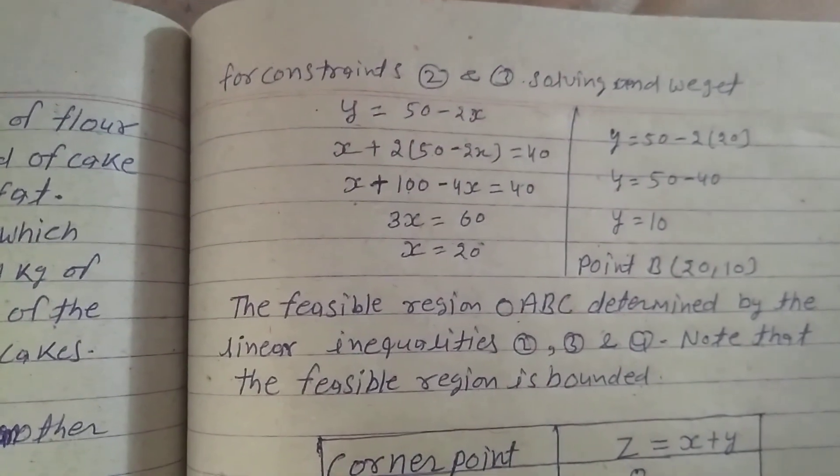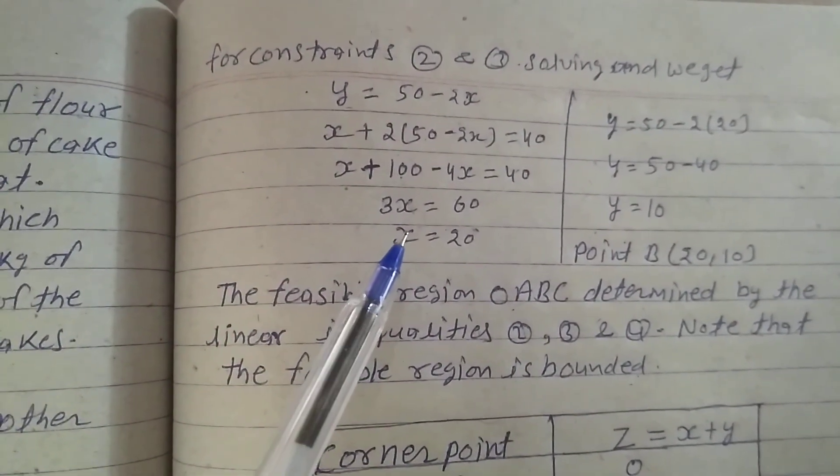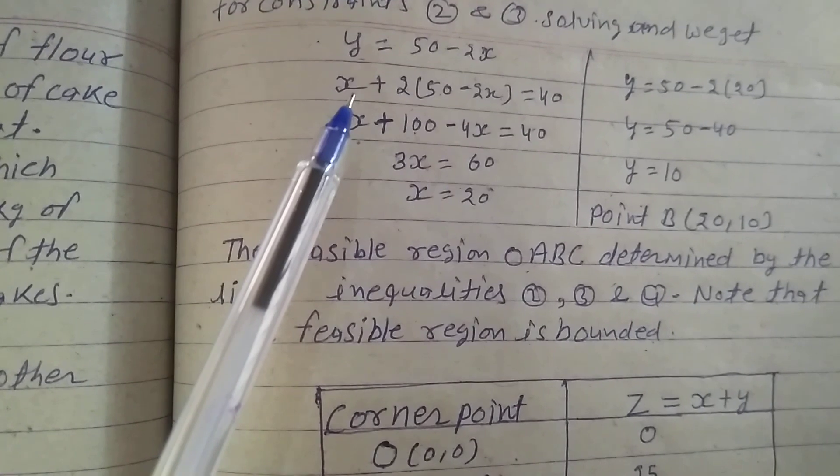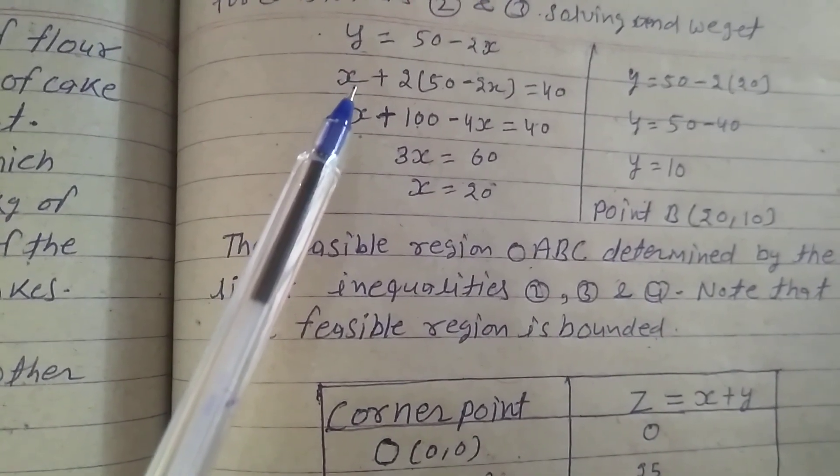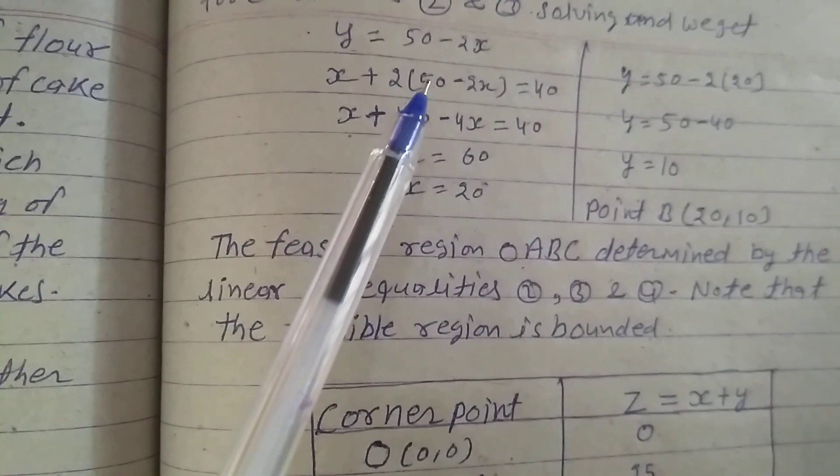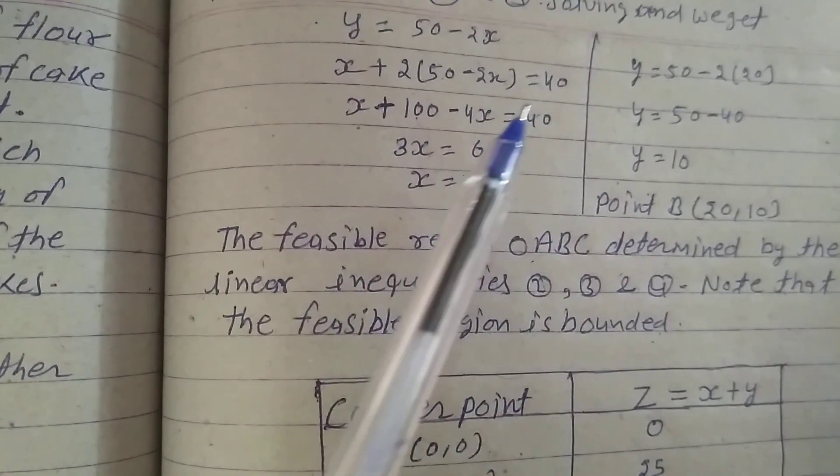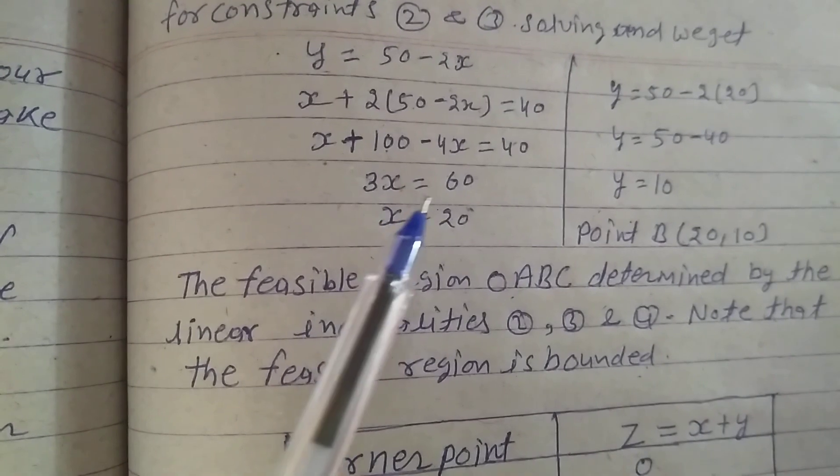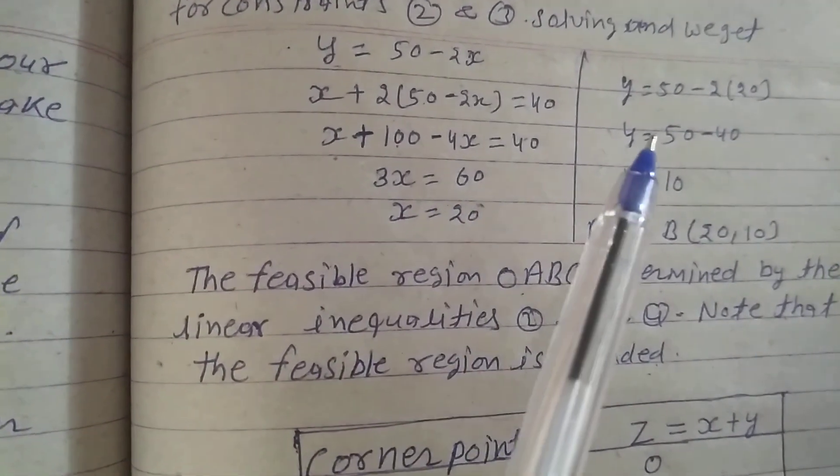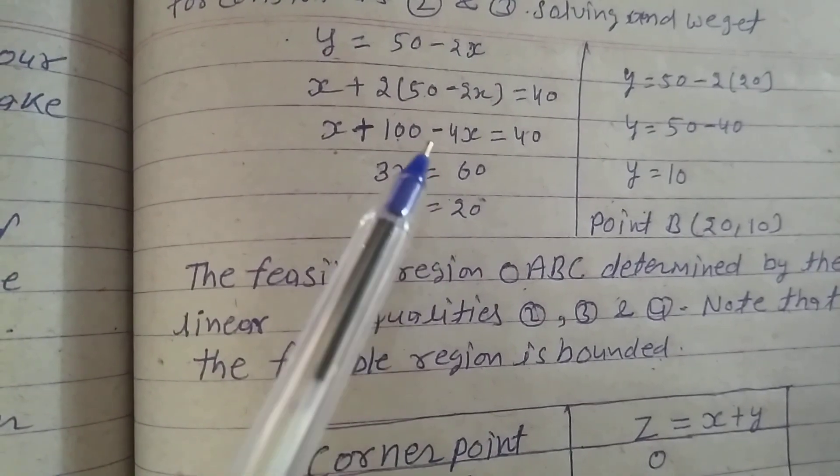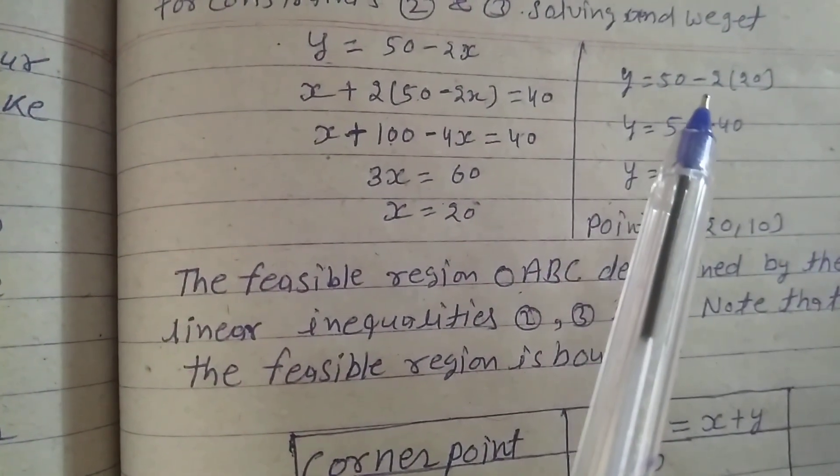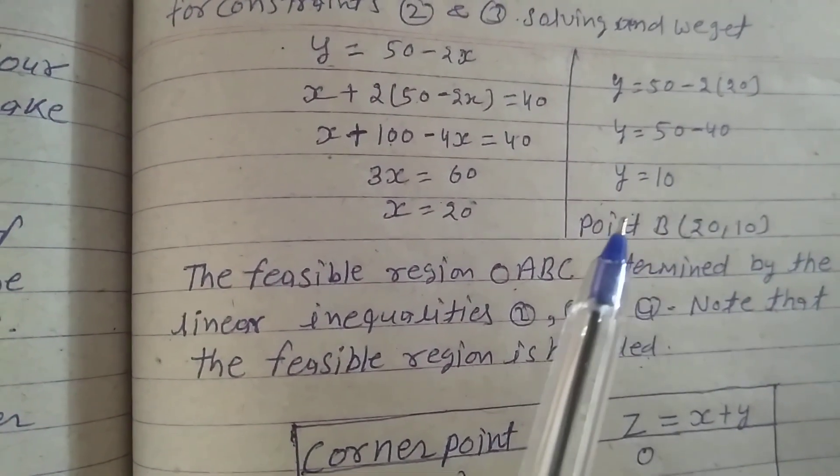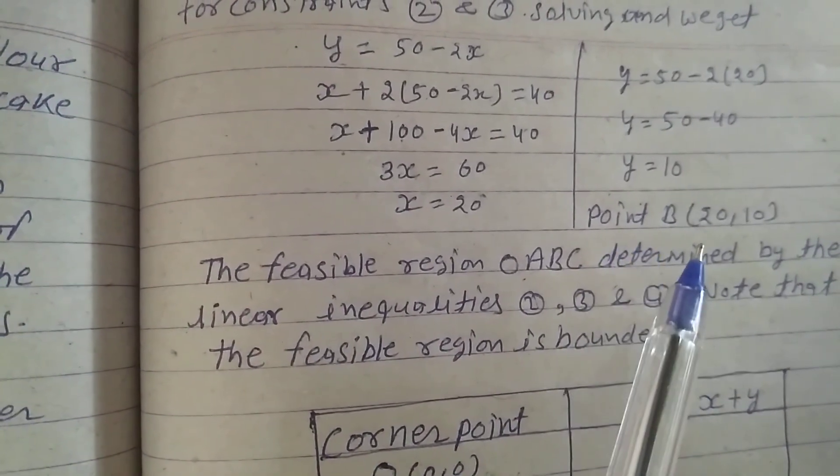For constraints 2 and 3, solving, we get: from constraint 2, y is equal to 50 minus 2x. Putting this in the third constraint: x plus 2(50 minus 2x) is equal to 40. So x plus 100 minus 4x is equal to 40. 3x is equal to 60, x is equal to 20. Putting the value of x here, y is equal to 50 minus 2(20), so y is equal to 50 minus 40, y is equal to 10. Point B is (20, 10).